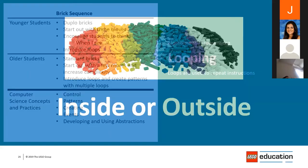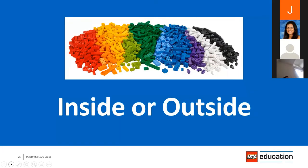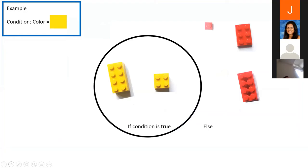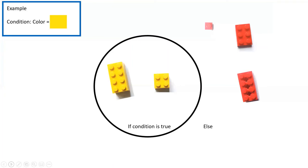Inside or outside is a way that you can introduce conditional thinking — conditional statements like if/else — as well as Boolean language. Boolean language is either yes or no: the condition triggers or it doesn't, it fits the condition or it doesn't. Here I have a circle on a piece of paper — you could build a frame or box out of bricks to use as your circle. You're going to give kids a condition and tell them what the inside of that circle represents versus the outside. The condition for this image is yellow: if it's yellow, if it's true, it goes inside the circle.